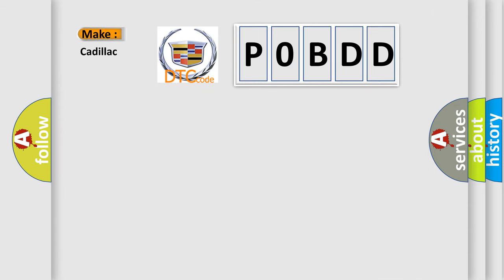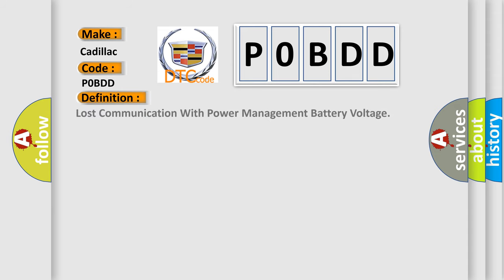So, what does the diagnostic trouble code P0BDD interpret specifically for Cadillac car manufacturers? The basic definition is: lost communication with power management battery voltage.